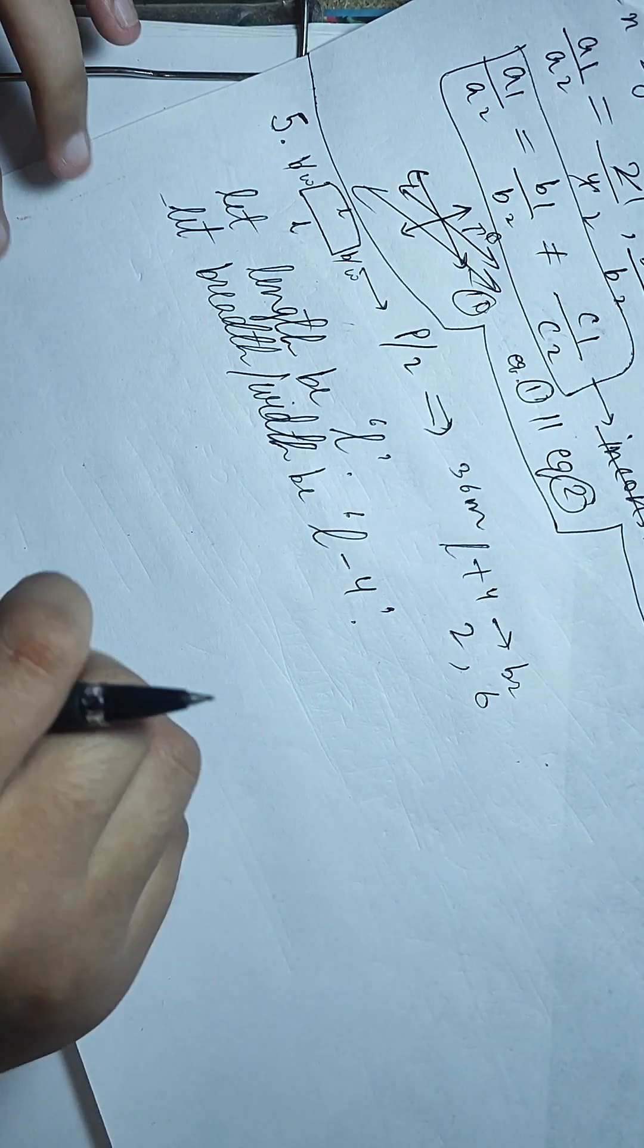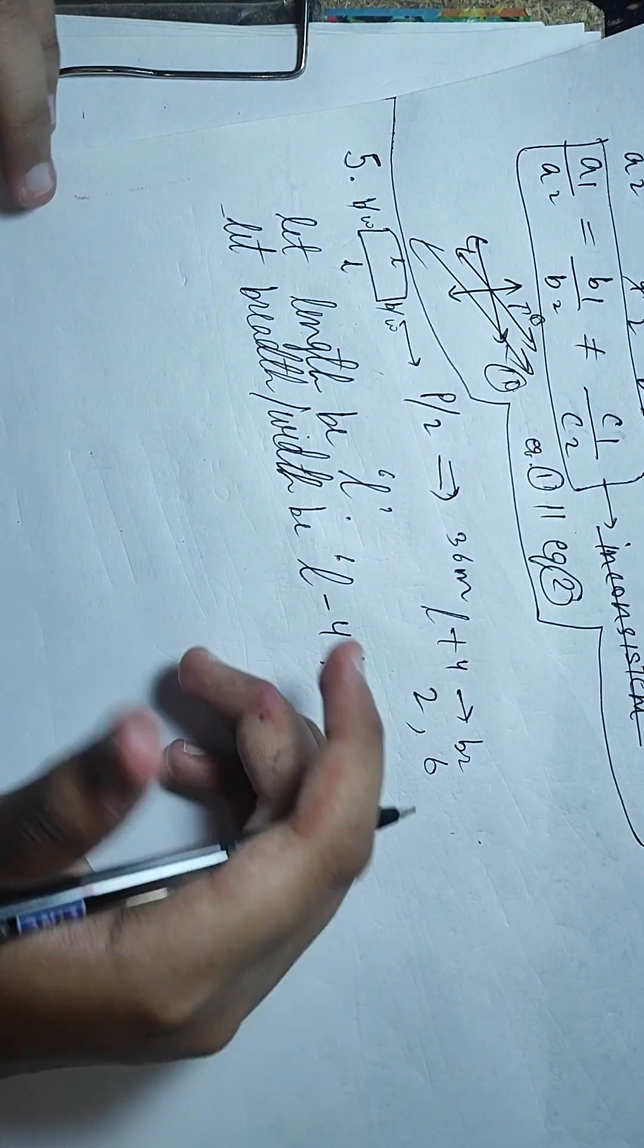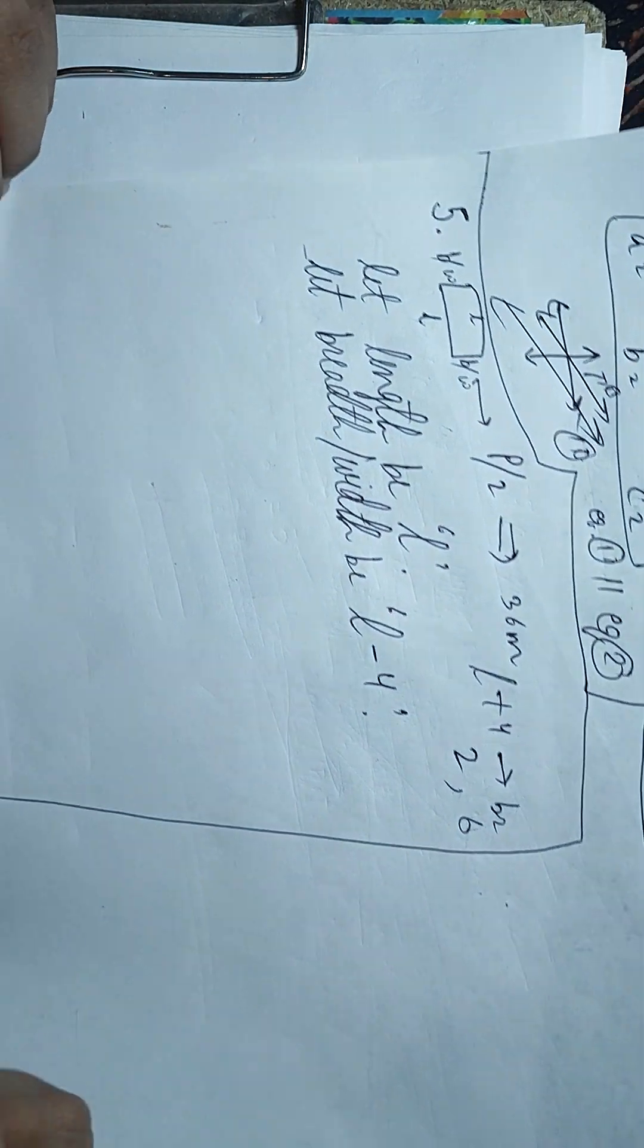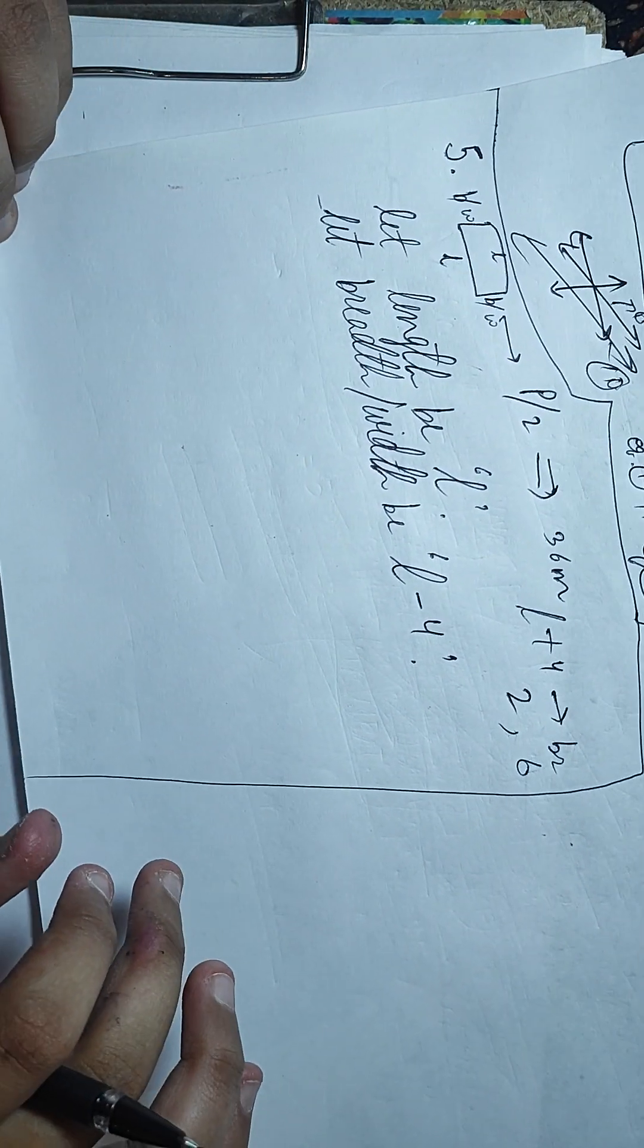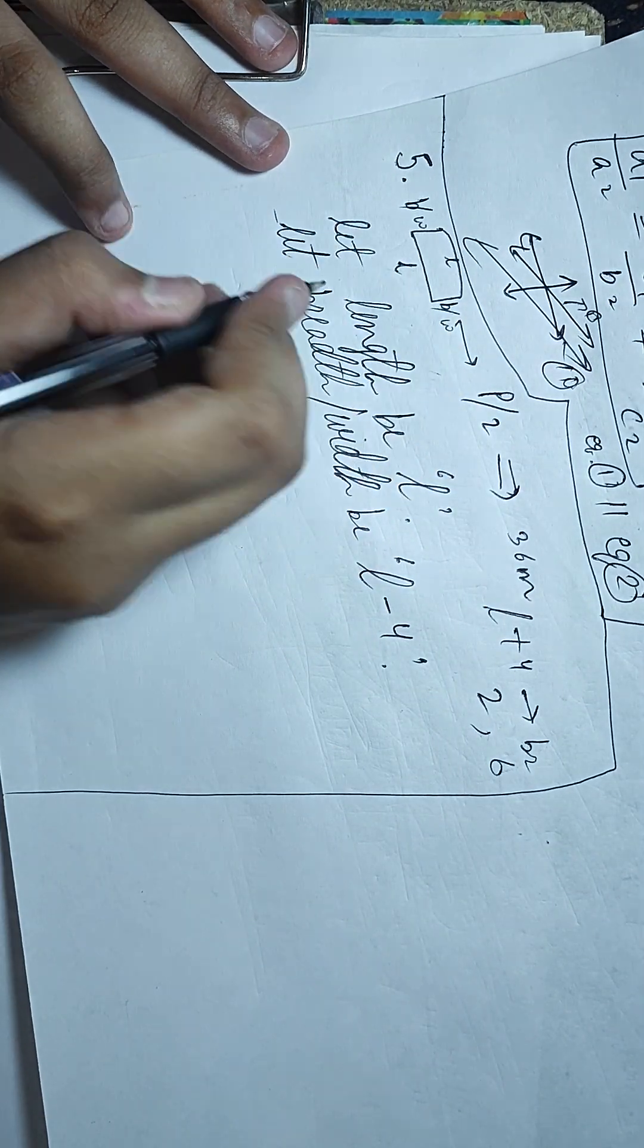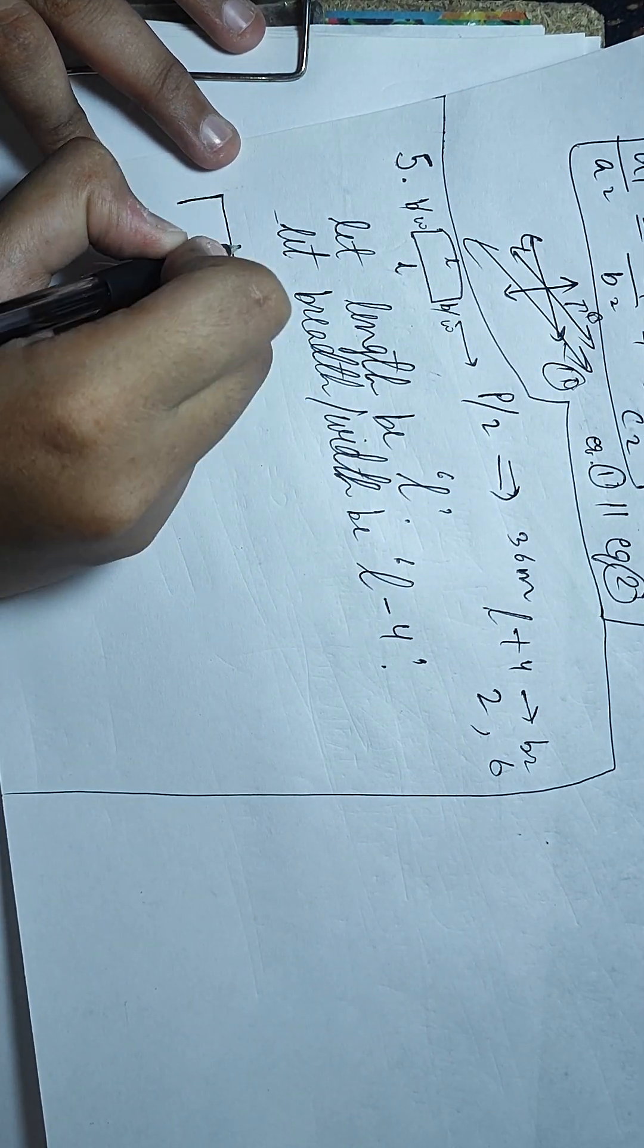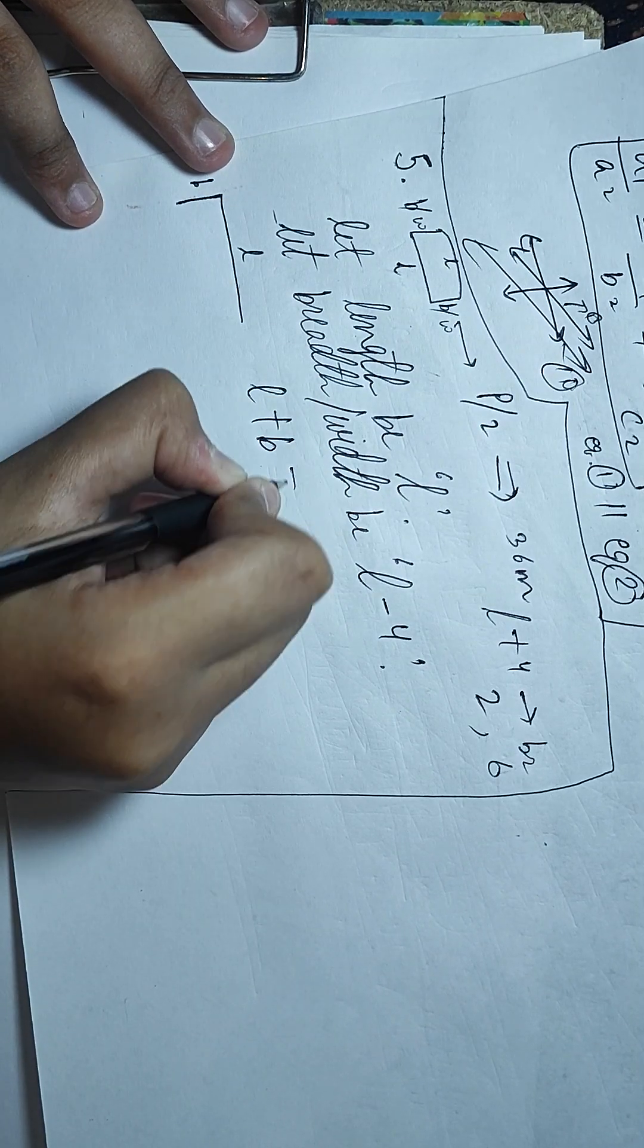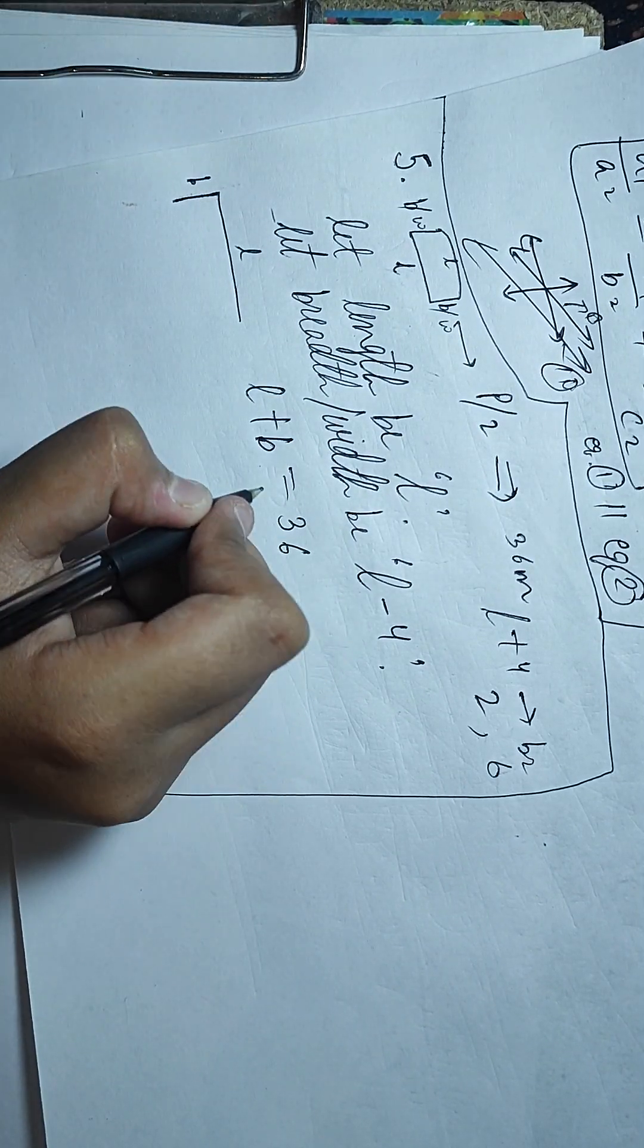36 meters is given as half the perimeter, meaning that this part has one length and one breadth. So what will happen, L plus B is equal to 36.